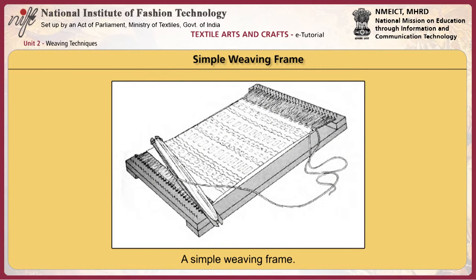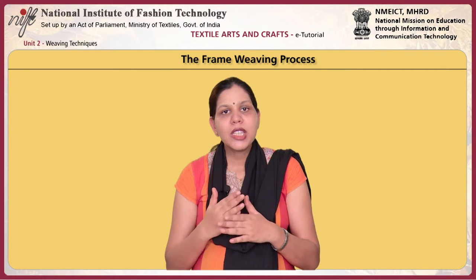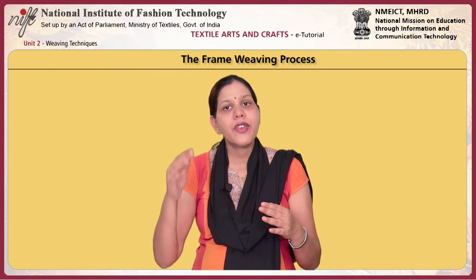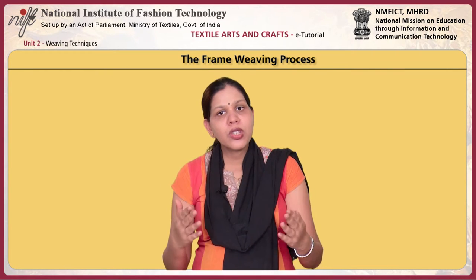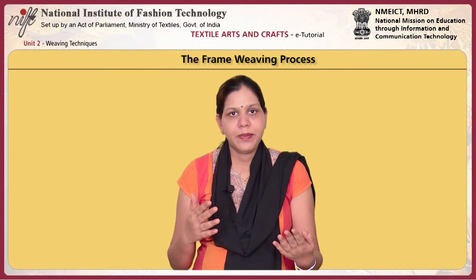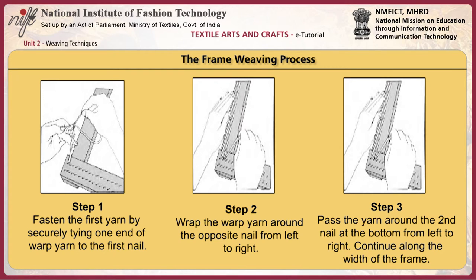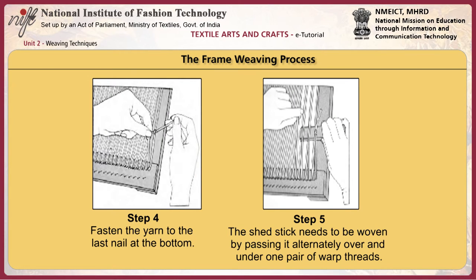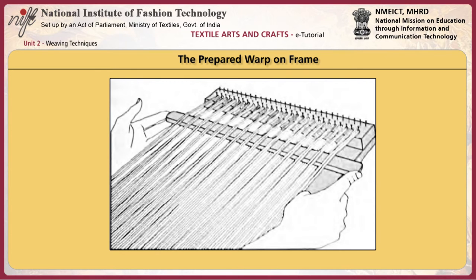This band displays the weaving techniques. Before starting to weave, the warp must be prepared. This is achieved by wrapping the yarn around the inner rows of nails. The outer row of nails would be used if a finer warp were required. First, fasten the first yarn by securely tying one end of the warp yarn to the first nail. Next, wrap the warp yarn around the opposite nail from left to right. Pass the yarn around the second nail at the bottom from left to right and continue along the width of the frame. It is very important that the tension on the warp must be even throughout. Fasten the yarn to the last nail at the bottom. Finally, the shed stick needs to be woven by passing it alternately over and under one pair of warp threads. This is the prepared warp on the frame.